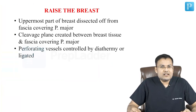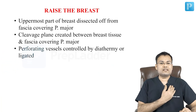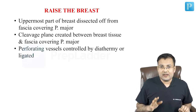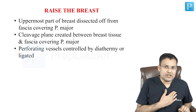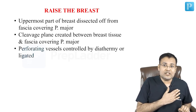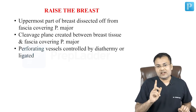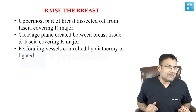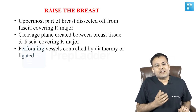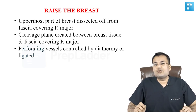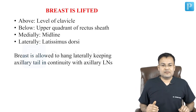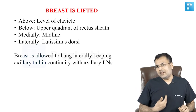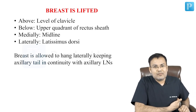Now, important points related to raising of the breast. The upper part of the breast is dissected off from the fascia covering the pectoralis major. The cleavage plane is located between the fascia covering the pectoralis major muscle and the breast tissue. There are perforating vessels which are ligated or controlled by diathermy. The breast is lifted above from the level of the clavicle, below up to the upper quadrant of the rectus sheath, medially up to the midline, and laterally up to the latissimus dorsi.